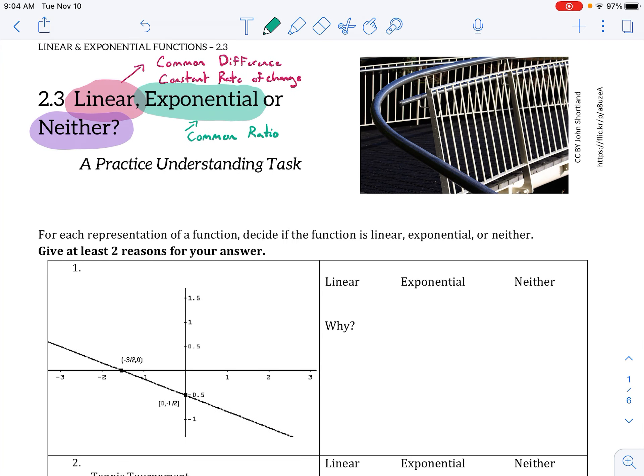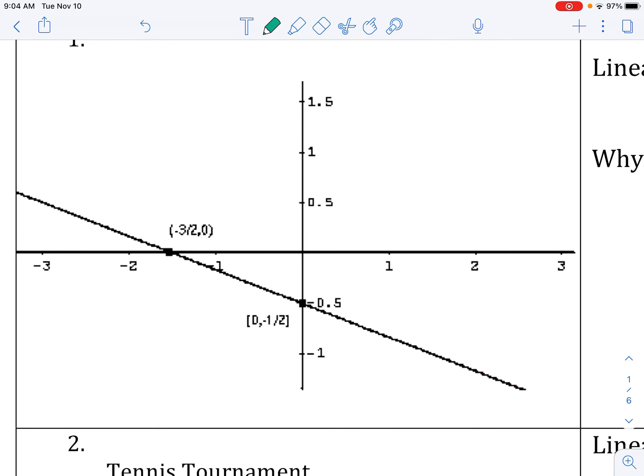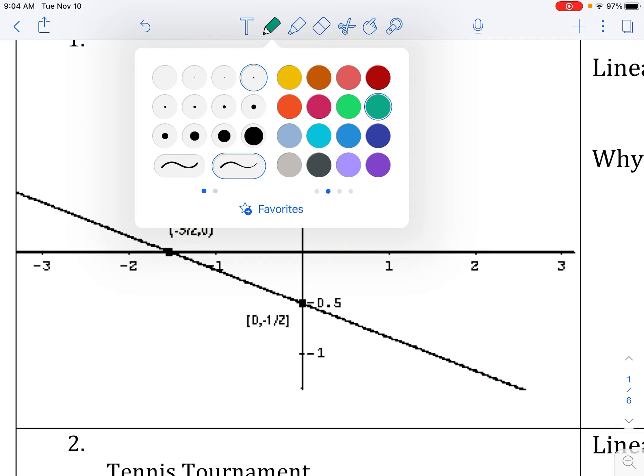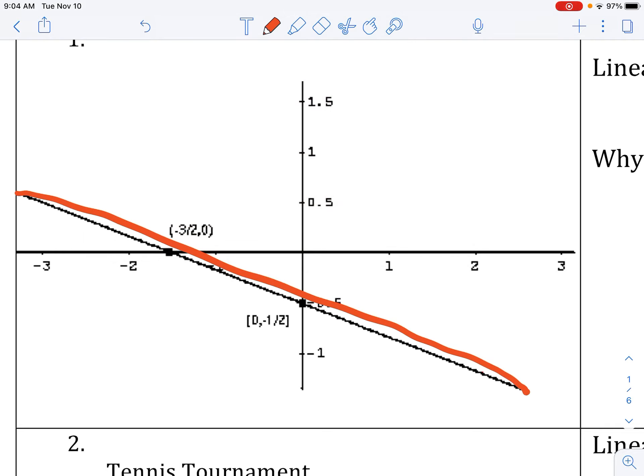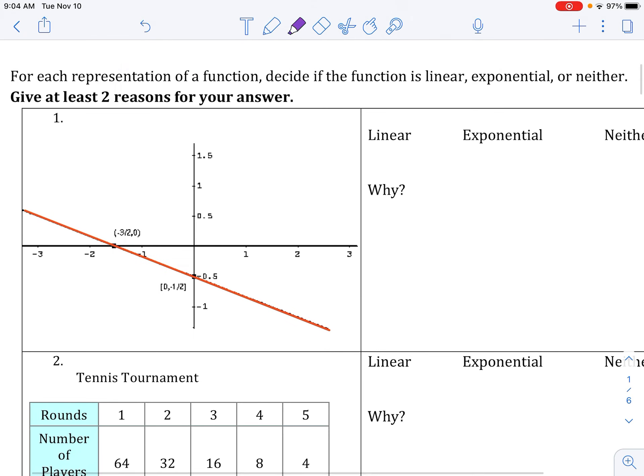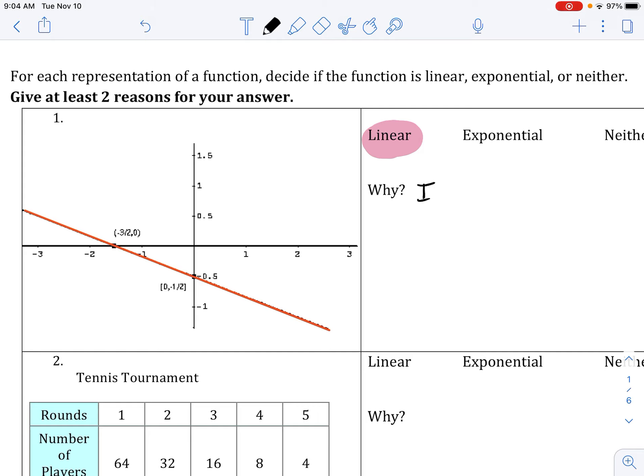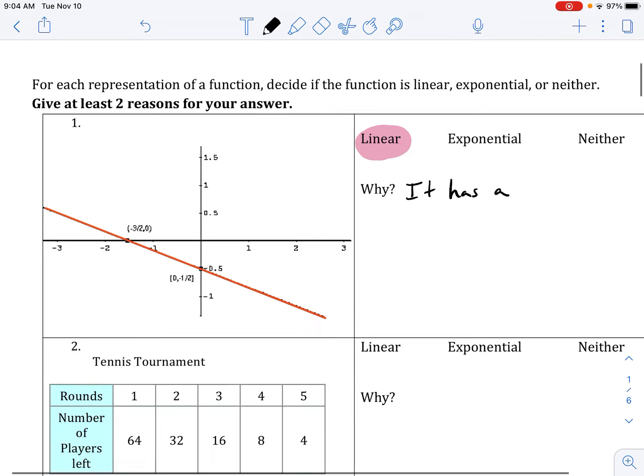So the first one we're looking at a graph and we have our line which is from here to here, and because that line is straight we know it's going to be linear. So we say linear, and one of the reasons we could say it's linear is it has a straight line.